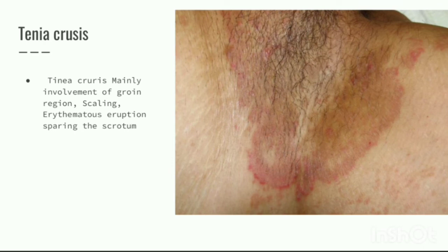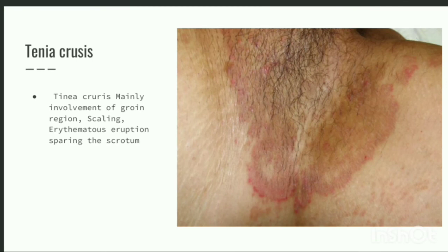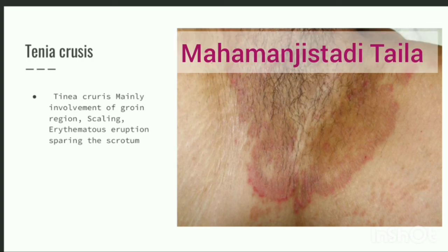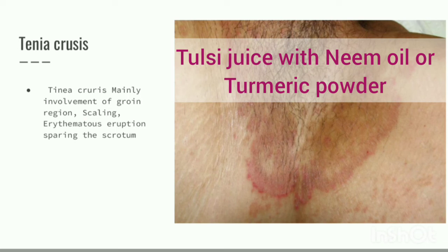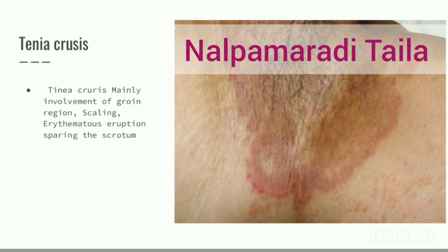Tinea cruris mainly involves the groin region, with scaling, erythematous eruptions sparing the scrotum. For Tinea cruris, the patient is advised to use Maha Manjishthadi Taila, and also a paste of fresh Tulsi juice mixed with Neem oil and Turmeric powder, applied at the affected area two to three times a day to prevent itching. The patient is also encouraged to use Nala Pamaradi Taila at the affected site.